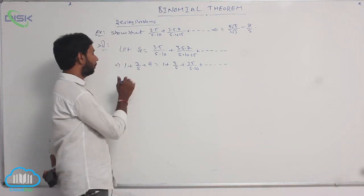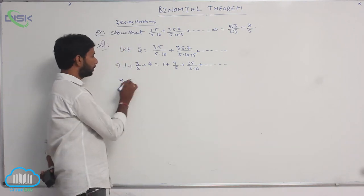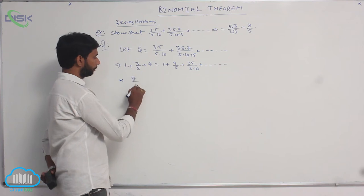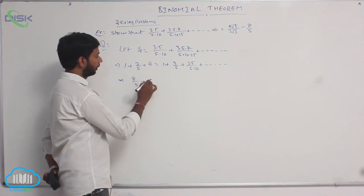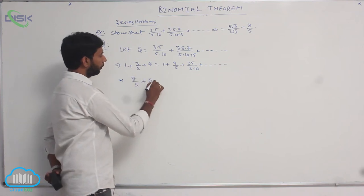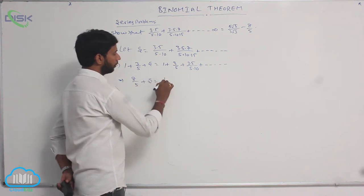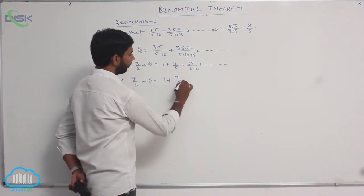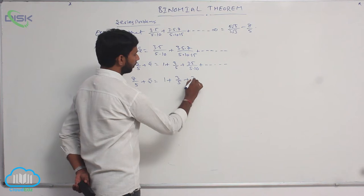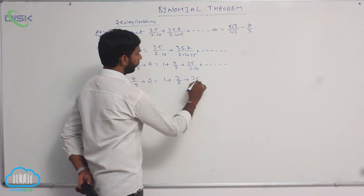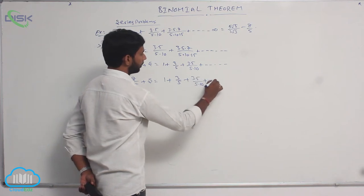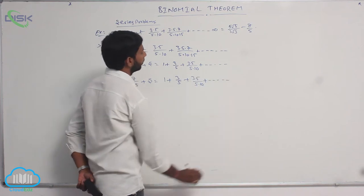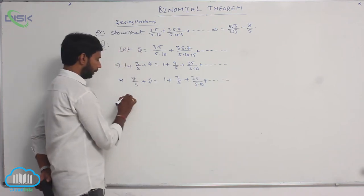Here 1 + 3/5 = 8/5, so 8/5 + S = 1 + 3/5 + 3·5/(5·10) + ... and so on. Now compare the right-hand side with the binomial expansion 1 + S.